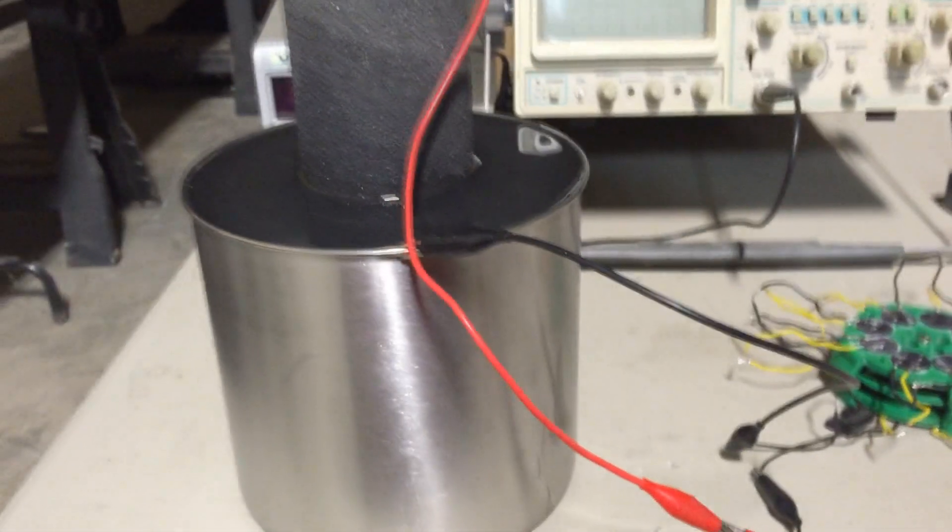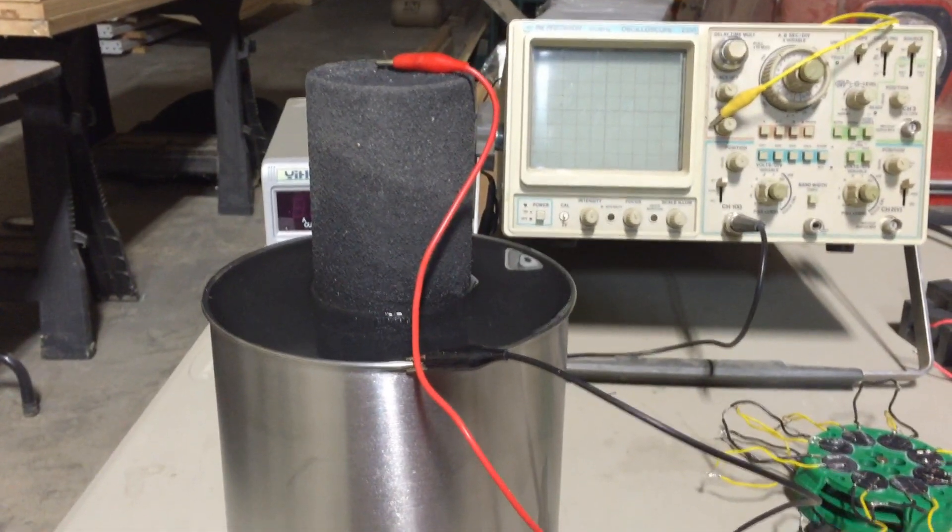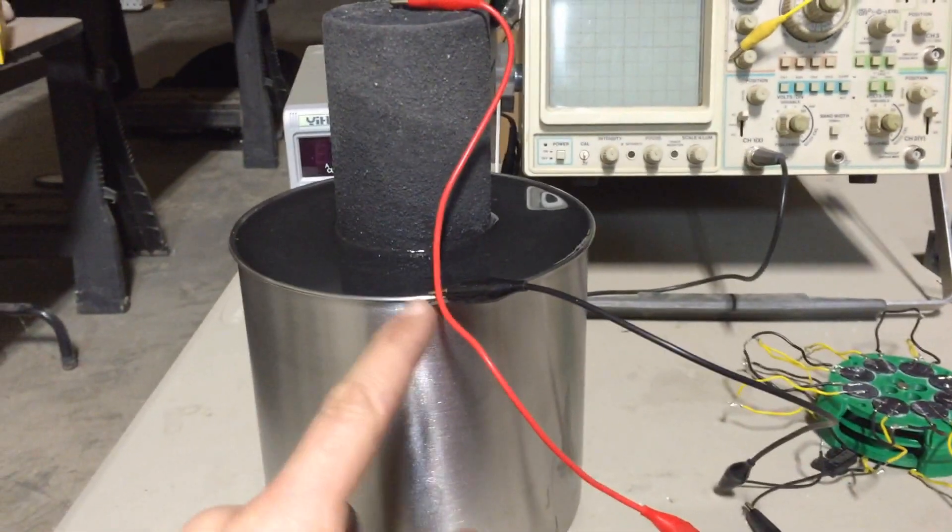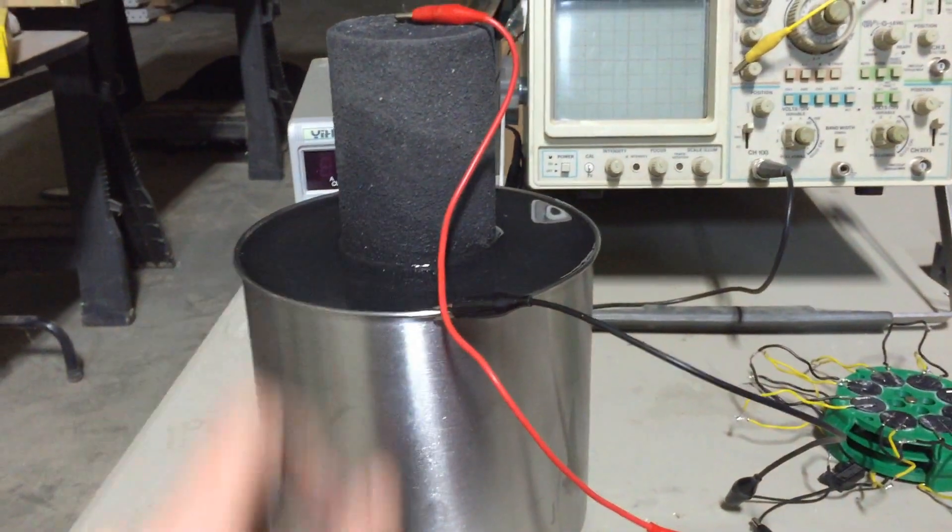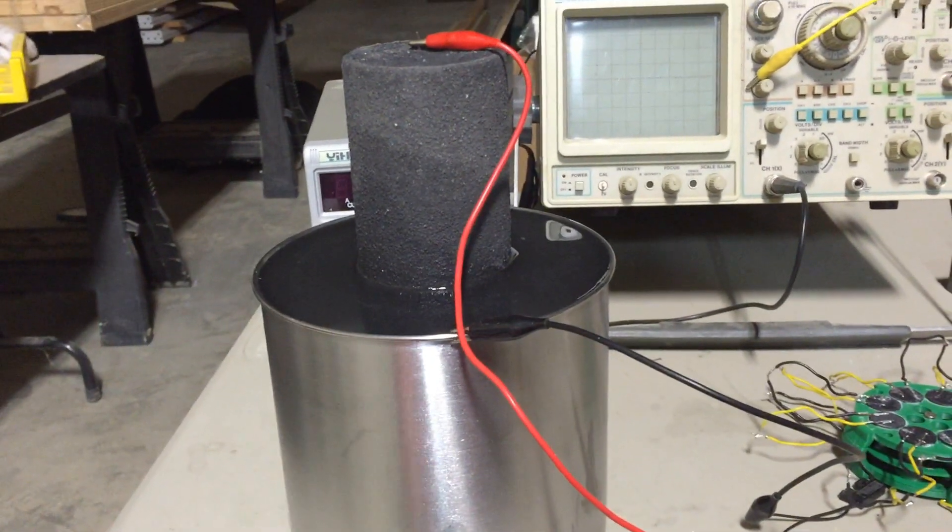So anyway, that's where I'm at so far. I want to test some different ideas - I may even try a crystal cell type structure between the stainless steel and the graphite.